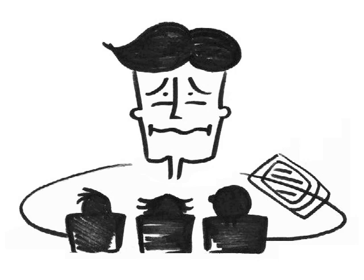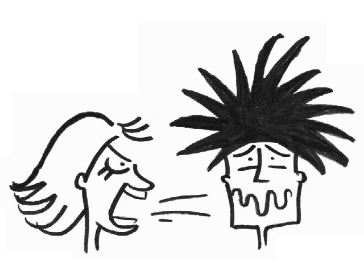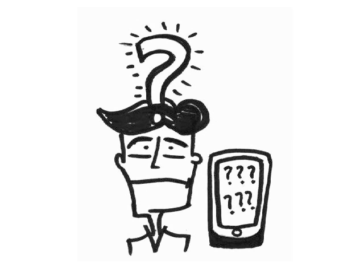Bill, all embarrassed, quickly switches to silent mode. Later that evening, he returns home and finds his wife angry, asking how come he didn't answer any of her calls. Bill looks at his new phone and realizes he forgot to switch off the silent mode. Looking at his phone, Bill thinks to himself: this is a smartphone — there must be a smarter way to do this.